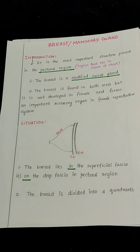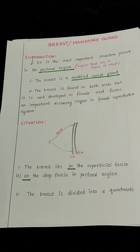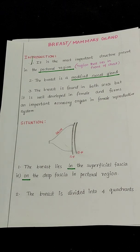We have now completed the first part on the breast or mammary gland covering situation, extent, relations, and structure. If you have any doubts or suggestions, please ask in the comments below. The next part will cover blood supply, lymphatic drainage, and applied anatomy of the breast. Thank you, bye-bye.